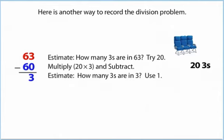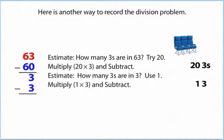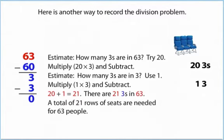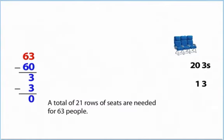Estimate how many threes are in 3, use 1. Multiply 1 times 3 and subtract. 20 plus 1 equals 21. There are 21 threes in 63. A total of 21 rows of seats are needed for 63 people.